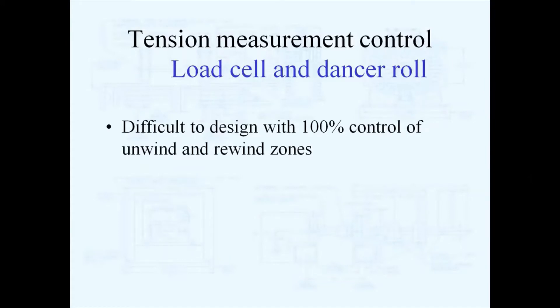As a general rule of thumb, closed loop systems, whether load cells or dancer rolls, can be difficult to design with 100% control of an unwind or rewind because you have build ratios to consider. You may have a 10 to 1 ratio, 22 to 1 ratio, maybe 30 to 1 ratio from the core to the outside of the roll. So it's hard to design closed loop systems to see that full ratio and control it accurately within that full ratio.